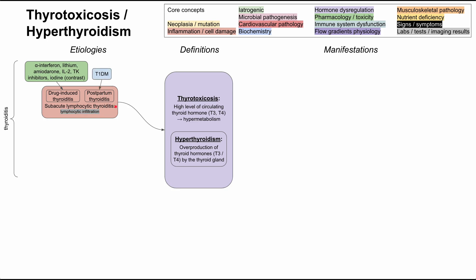Postpartum thyroiditis typically happens after pregnancy, and one distinguishing feature is that you'll have TPO antibodies detectable in the blood. One predisposing factor is patients that have type 1 diabetes. Note that both of these are autoimmune problems, so it follows that if you have type 1 diabetes, you're predisposed to getting postpartum thyroiditis after pregnancy.